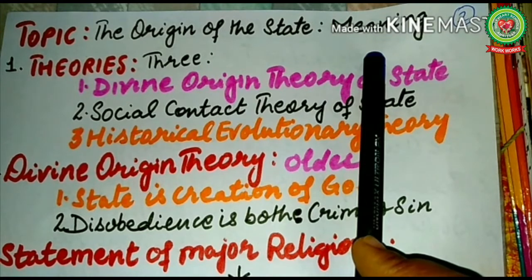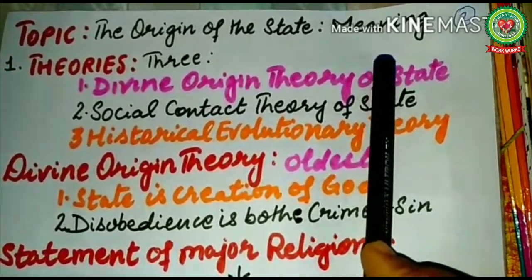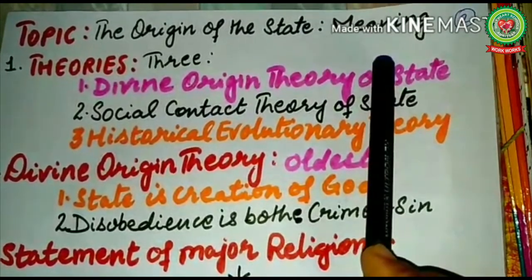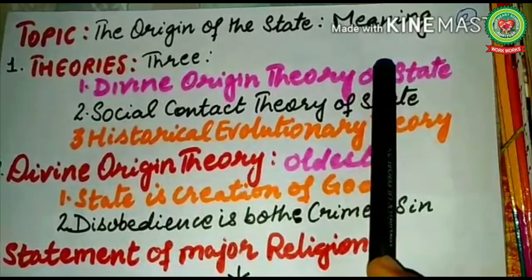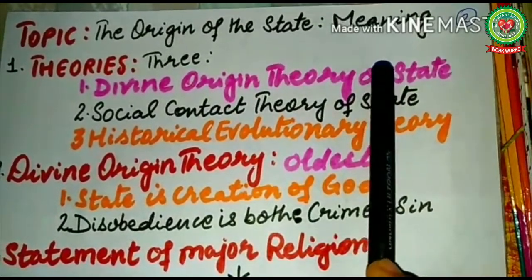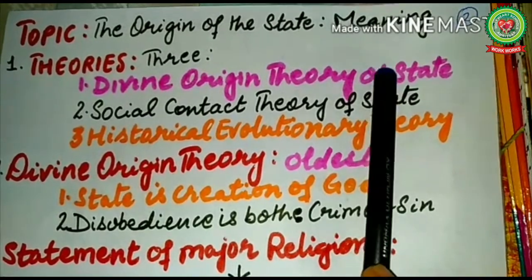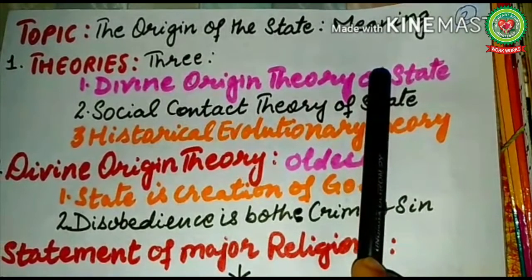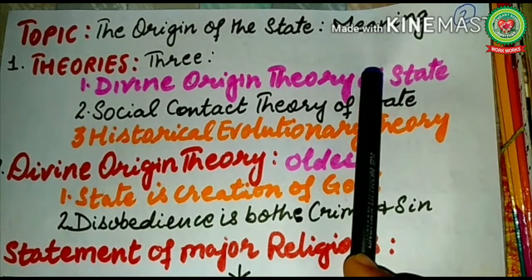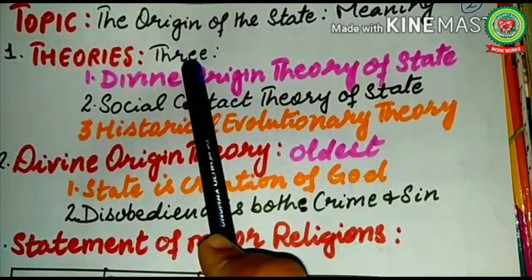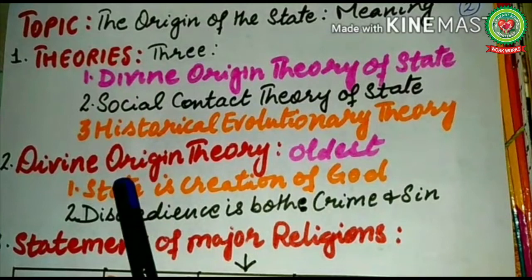In the 17th and 18th centuries, several thinkers like Hobbes, Locke, and Rousseau came with the theory that the state was a machine that came into being as a result of the social contract made by people living in the prehistoric state of nature. But now thinkers believe that the state originated gradually as a result of historical evolution. The historical evolutionary theory came to be the most accepted theory. So in this chapter, I will discuss three theories: the divine origin theory, the social contract theory, and the historical evolutionary theory.